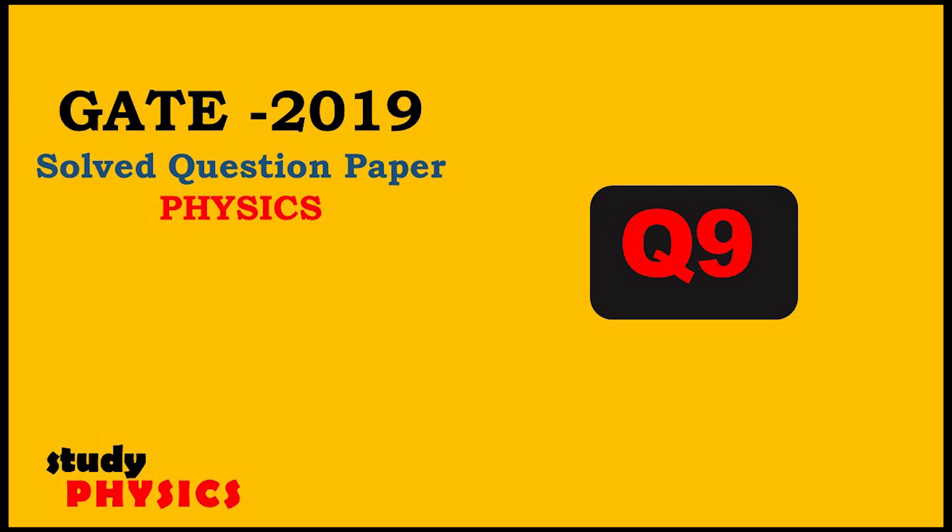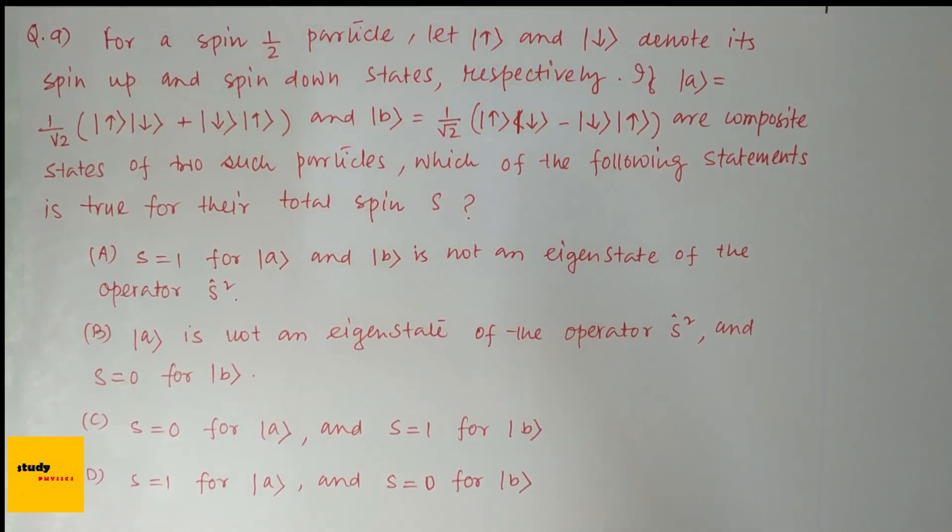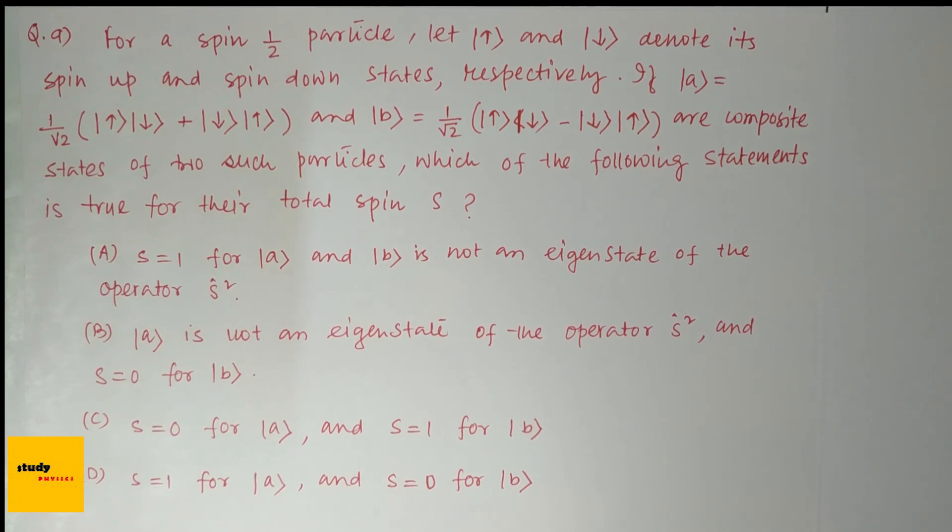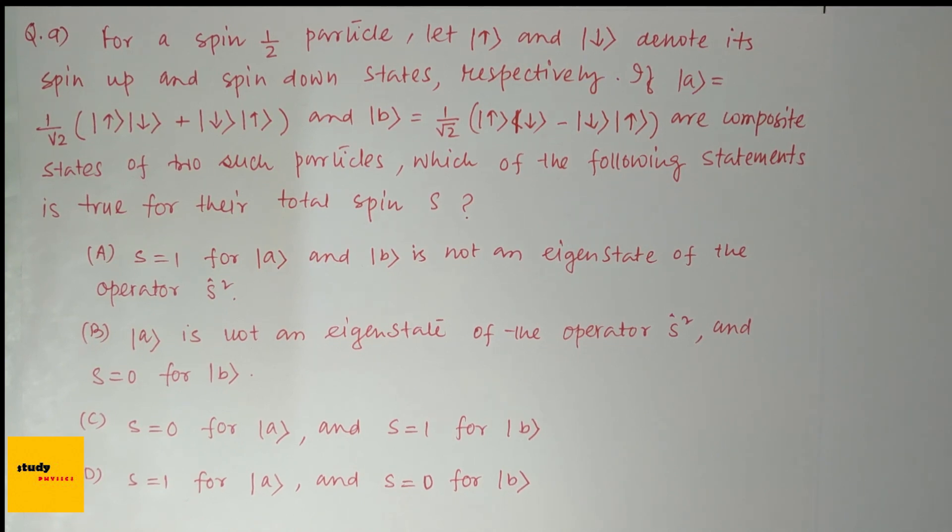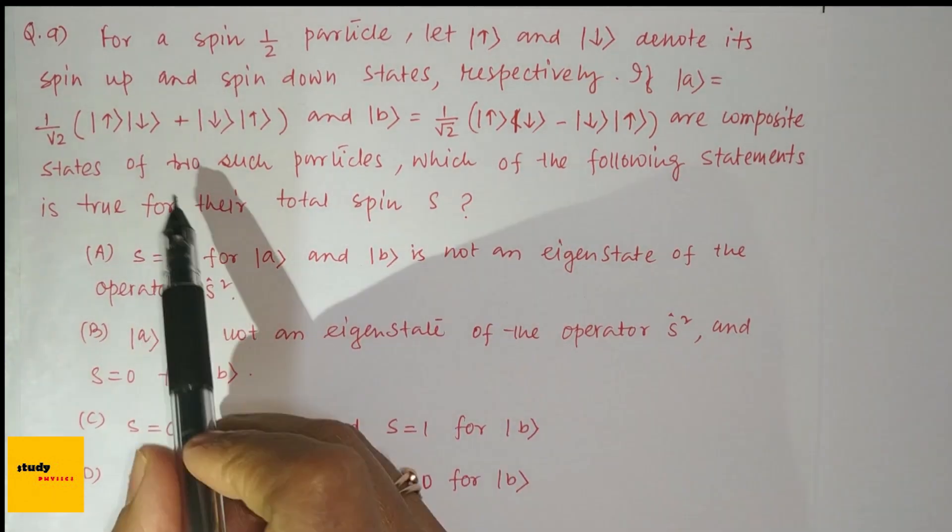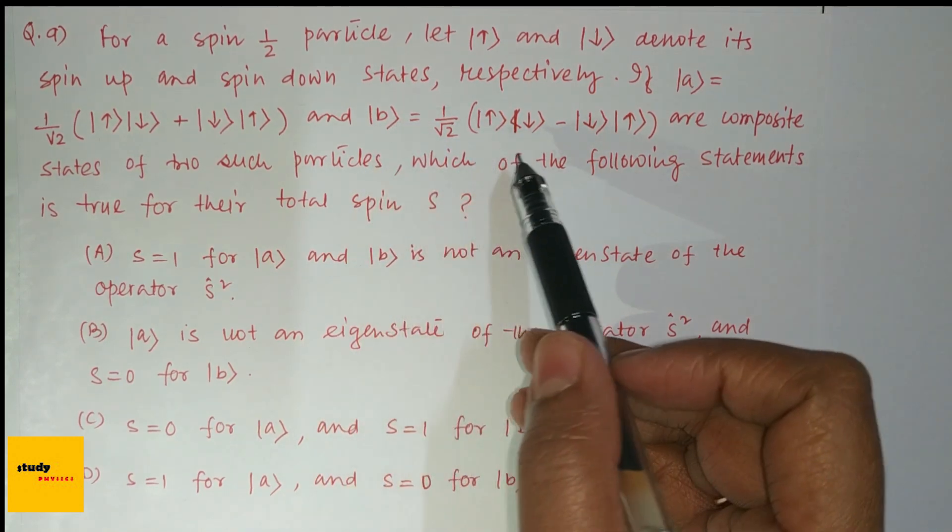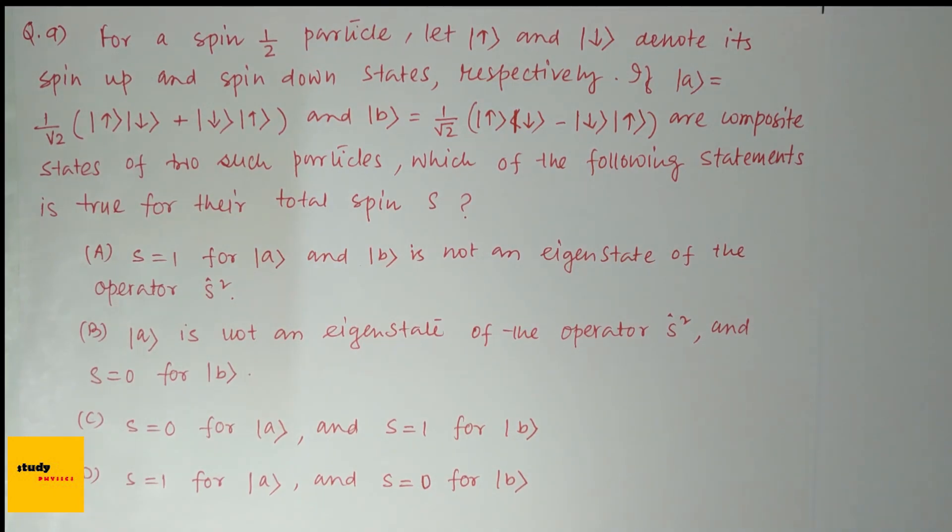Hi everyone, welcome to study physics. Here's question number nine. For a spin half particle, let |↑⟩ and |↓⟩ denote its spin up and spin down states respectively. If |a⟩ = 1/√2 (|↑↓⟩ + |↓↑⟩) and |b⟩ = 1/√2 (|↑↓⟩ - |↓↑⟩) are composite states of two such particles, which of the following statements is true for their total spin S?